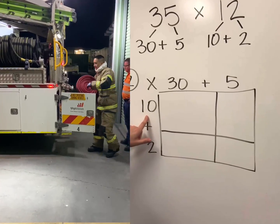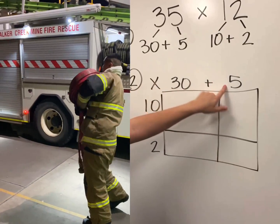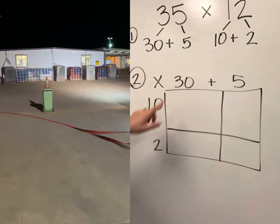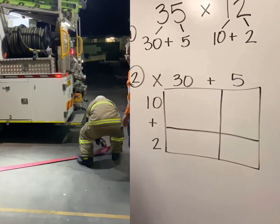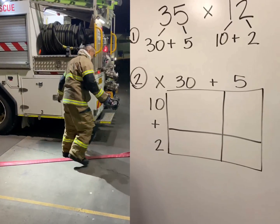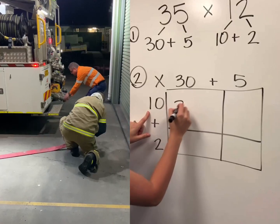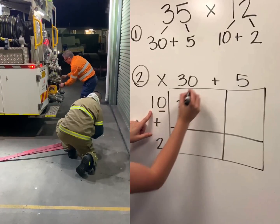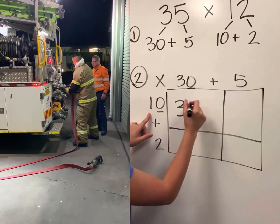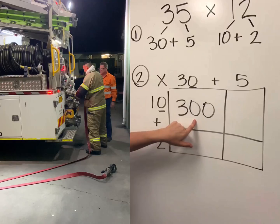Starting with our very first number on the top, we say 10 times this, 10 times that. So first we're going to do 10 times 30. Sometimes it gets a little tricky with those extra zeros when we're multiplying by a 10. I like to say 1 times 3 is 3, and how many zeros do we have? We've got 2, so we attach them to the end of the number. So 10 times 30 is 300.